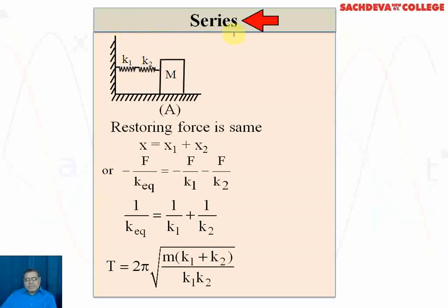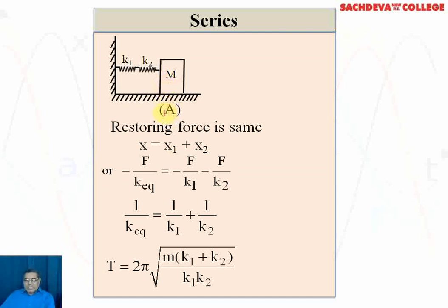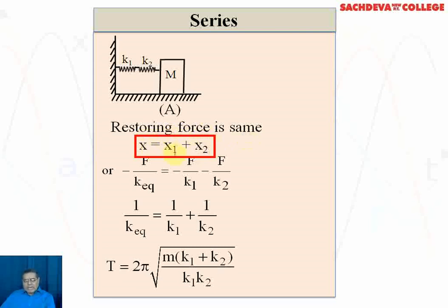First, the series combination is indicated in the figure. k1 and k2 are the spring constants of the individual springs connected in series with a rigid support, and the mass attached to the combination is M. The restoring force is the same for both springs, so the total displacement x equals x1 plus x2, where x1 is the displacement due to k1 and x2 is the displacement due to k2.